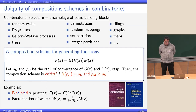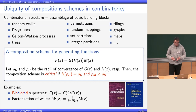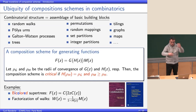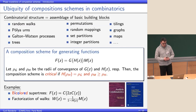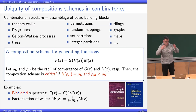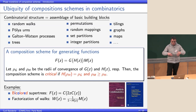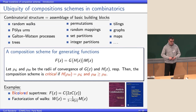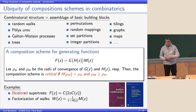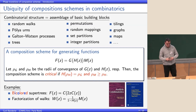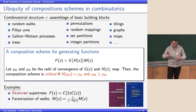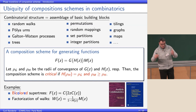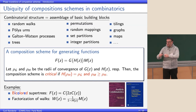In combinatorics we study a lot of different combinatorial structures; we want to enumerate them, get asymptotic properties, and so on. Quite often these are an assemblage of basic building blocks — for example, random walks as a set of steps, Pólya urns as a set of building blocks, trees as a sequence of subtrees, so Galton-Watson processes can also be seen in this way.